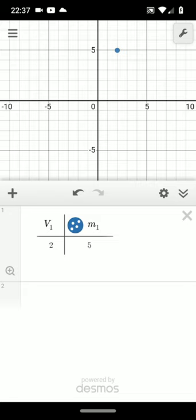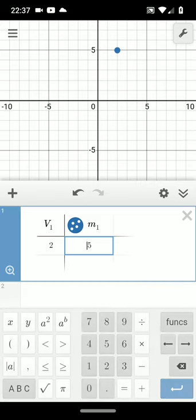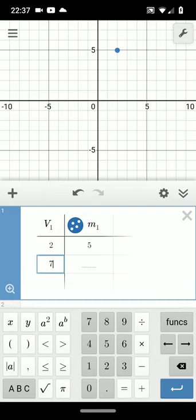You can plot points on the graph. Let me add another point to my table. I'll put a point at seven and eight. So I've got two points on my graph.